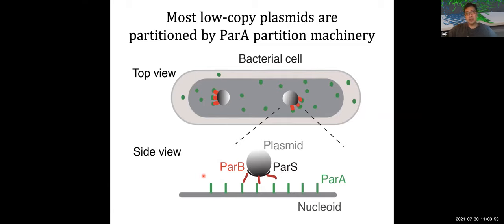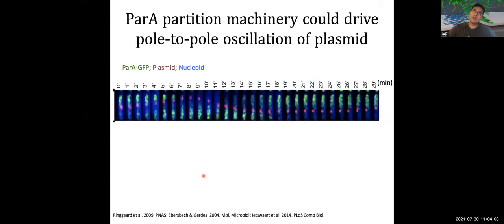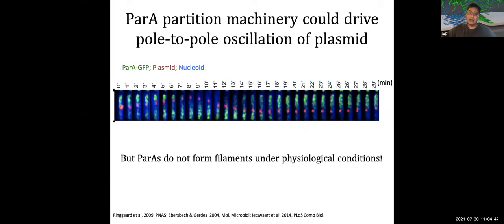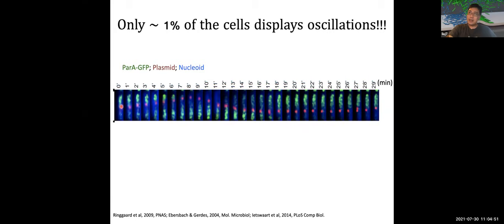However, the underlying mechanism of partition is still not well understood. The partition machinery can drive very diverse motility patterns. For example, it can drive the so-called pole-to-pole oscillation of plasmids, where ParA is in green, the plasmid is in magenta, and the nucleoid is in cyan. The plasmid travels back and forth while chasing the ParA. There are many filament-based mathematical models proposed to explain this oscillation, similar to microtubule spindle-based chromosome oscillations in eukaryotic cells. But now we know that ParA does not form filaments under physiological conditions, and more importantly, only 1% of cells have this kind of oscillation in wild type.